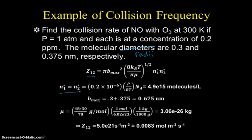The concentrations need to be expressed as molecules per volume. We take the parts per million and multiply by the inverse of the volume and Avogadro's number to get the number of molecules per liter. We get 4.9 × 10^15 molecules per liter. b_max is the sum of the radii of the particles, 0.675 nanometers. μ can be calculated based on our identity.